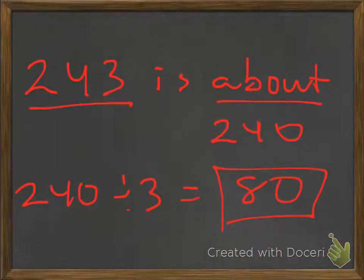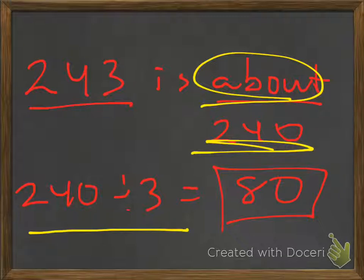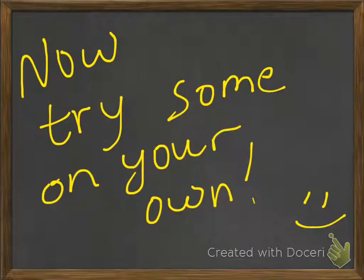So, since 243 is about, again that's a key word, about 240, we know that 240 divided by 3 is 80. Alright, well now try some on your own. Good luck.